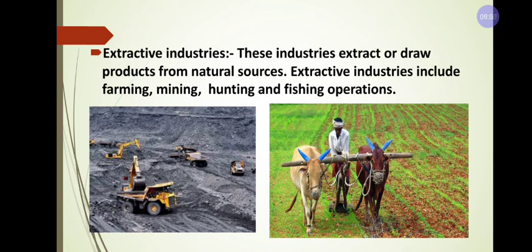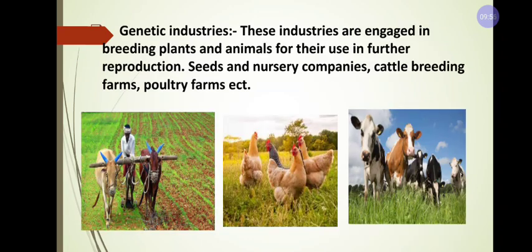If you look at the picture, you can see bulldozers digging — that is mining. The best mining place is Ballari, where they extract valuable resources. Another example is agriculture: nature provides us with land, and from that land we can grow vegetables, fruits, or flowers, which we then sell to earn money. These activities are all called extractive industries.